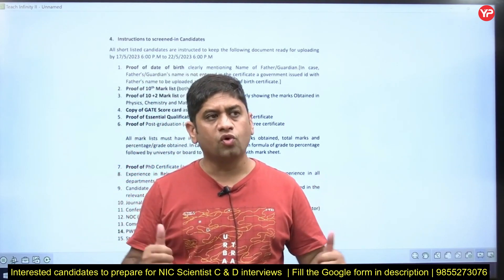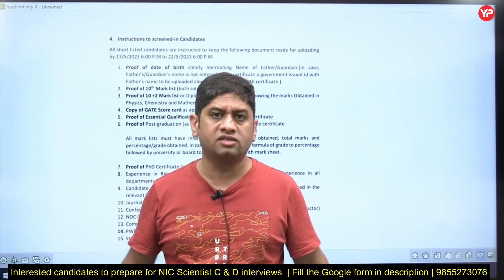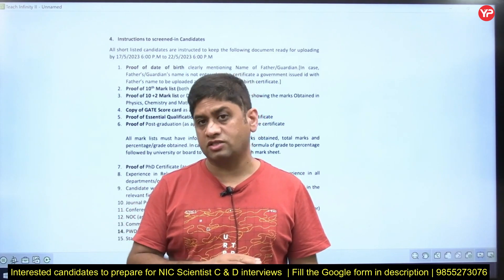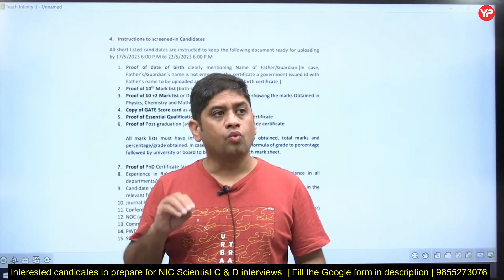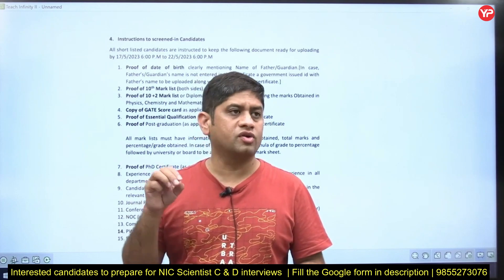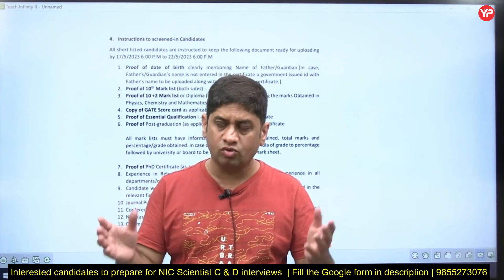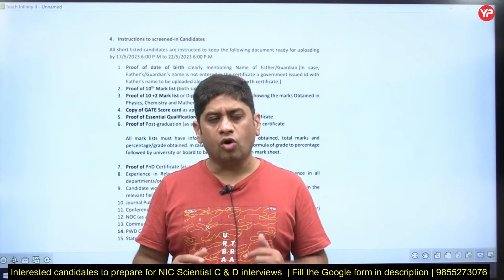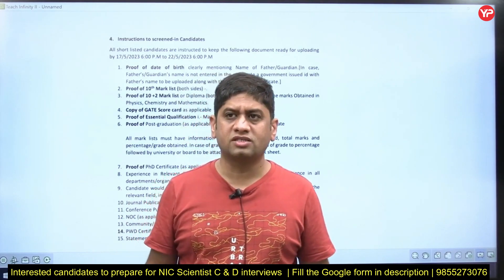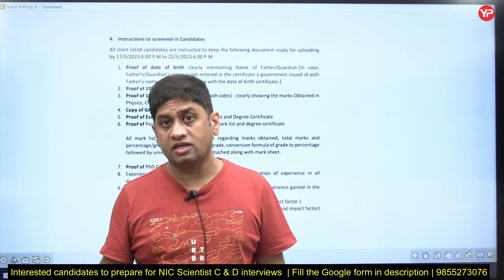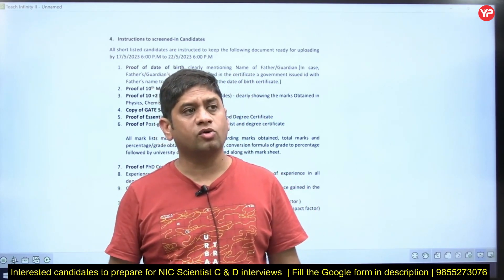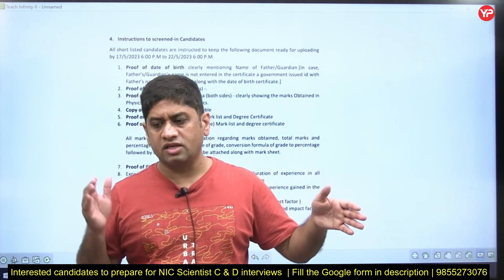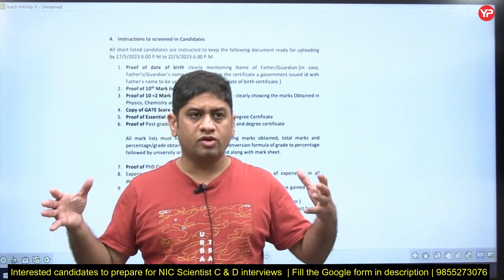Because this is a four-year experience-based job for Scientist C and Scientist D, the focus will be more on your past experience — what you have done in those four years and what were your achievements. They will ask you about your job roles and responsibilities, and how that particular job experience is relevant for National Informatics Center. You should know everything about NIC and make a connection between your job and NIC.